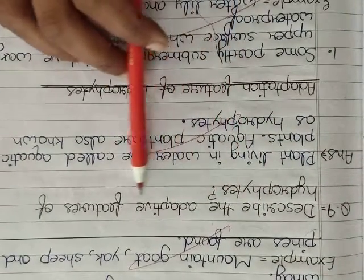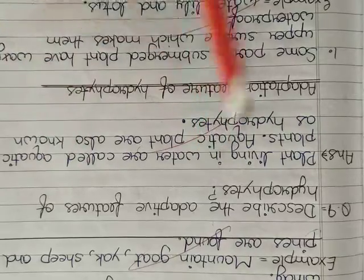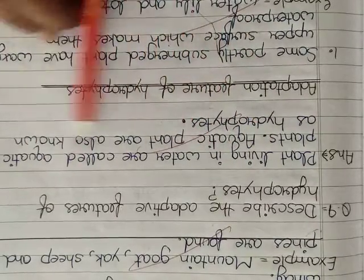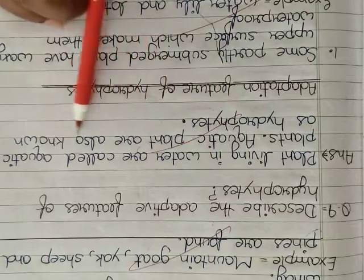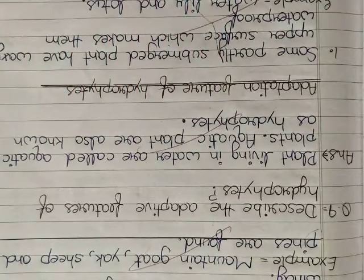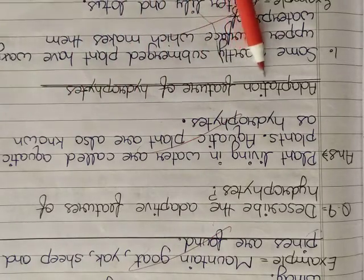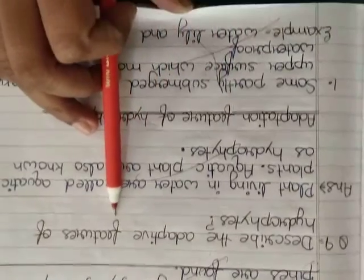Question number 4. Describe the adaptive feature of hydrophytes. Plants living in water are called aquatic plants. Aquatic plants are also known as hydrophytes. Adaptation feature of hydrophytes.